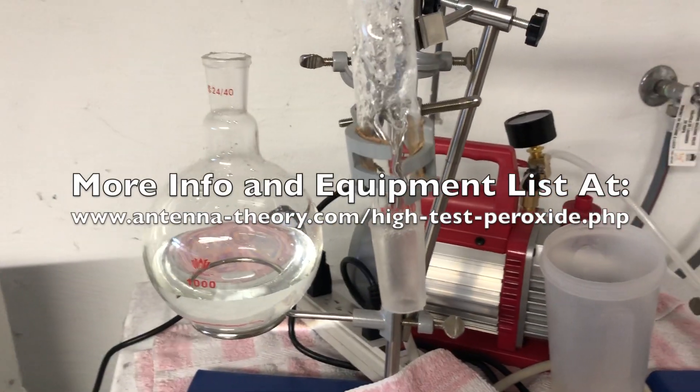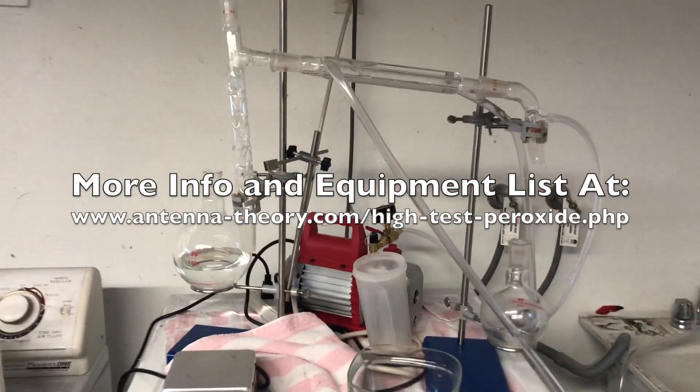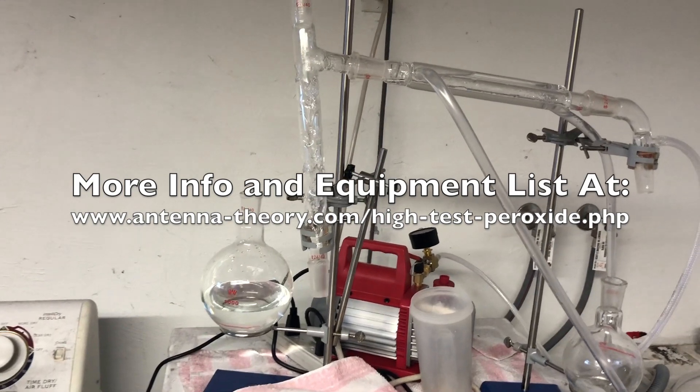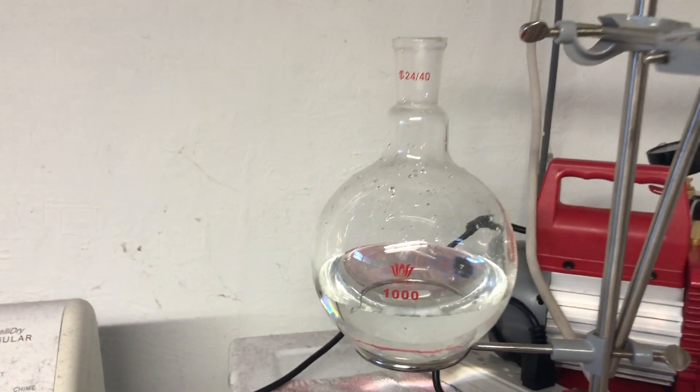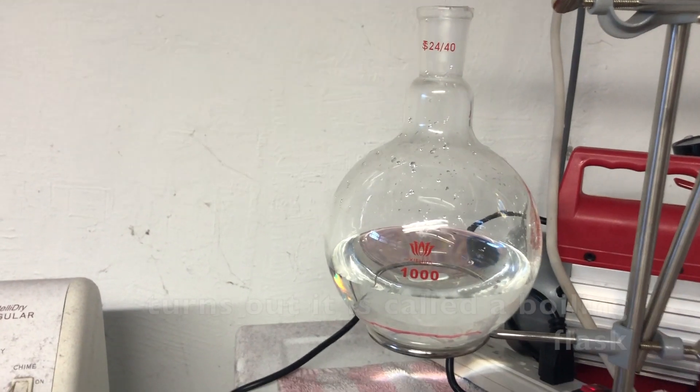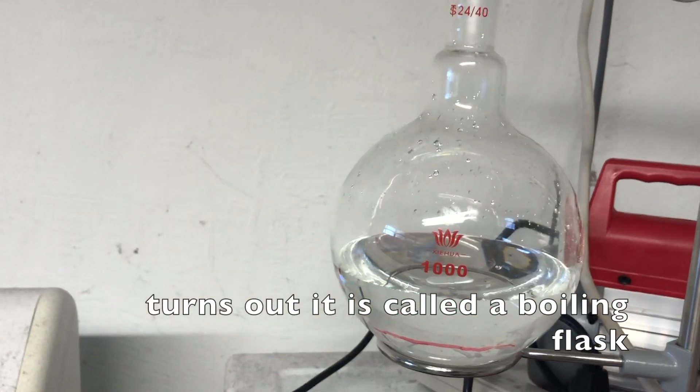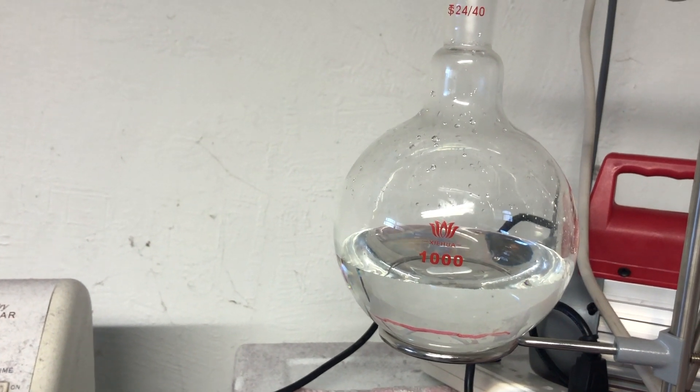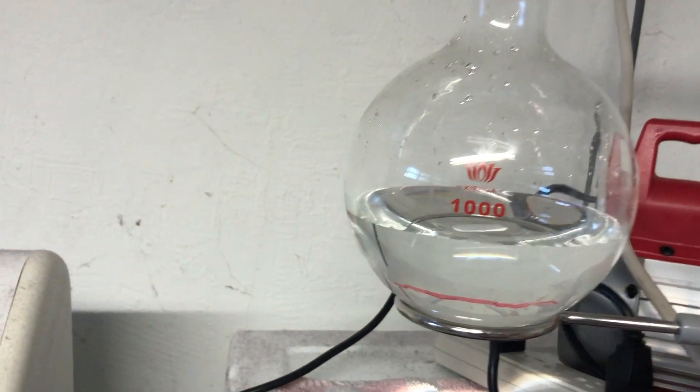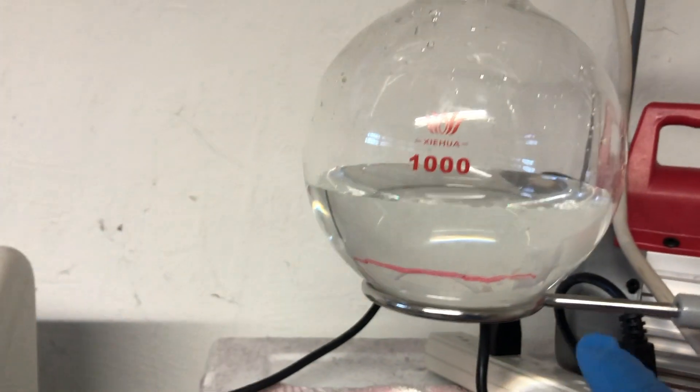To take it the rest of the way we're gonna do what's called a fractional distillation. Start with using a one liter flask. So I put 400 milliliters in there.